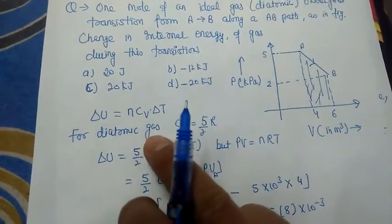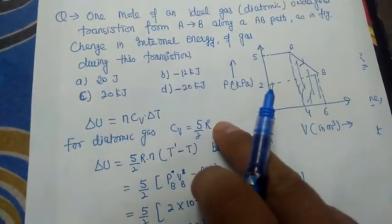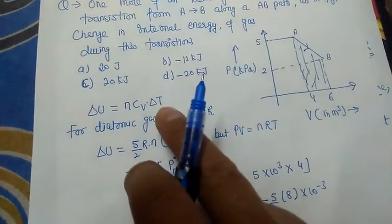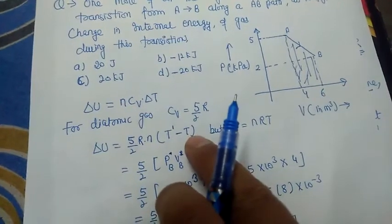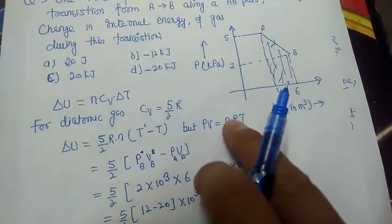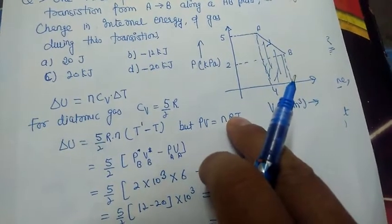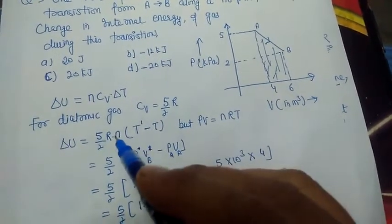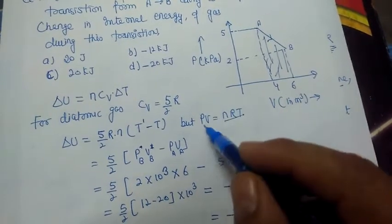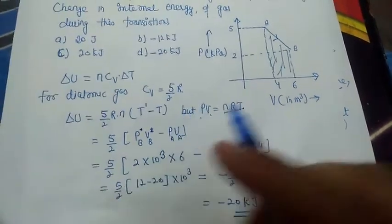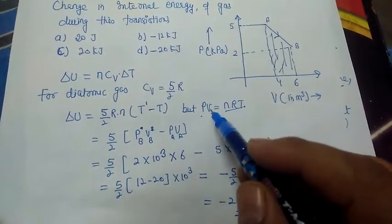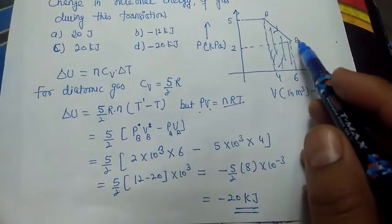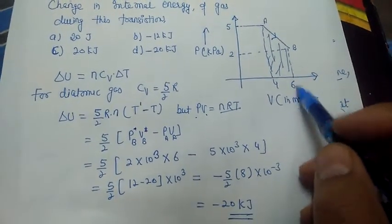The internal energy change is ΔU = nCvΔT. For a diatomic gas, Cv = 5/2 R. Using the ideal gas equation PV = nRT, we can write nRΔT = Δ(PV), so ΔU = (5/2) × Δ(PV). The graph gives pressure and volume values at points A and B.